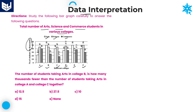Now look at the first question. Based on this information, it is very clear. The information is about the total number of students taking arts, science, and commerce in various colleges A to F — six colleges. All the values are in terms of thousands. Look at the first question: the number of students taking arts in college B. The only thing you have to be careful about is observation — which college is mentioned and which bar you need to take.